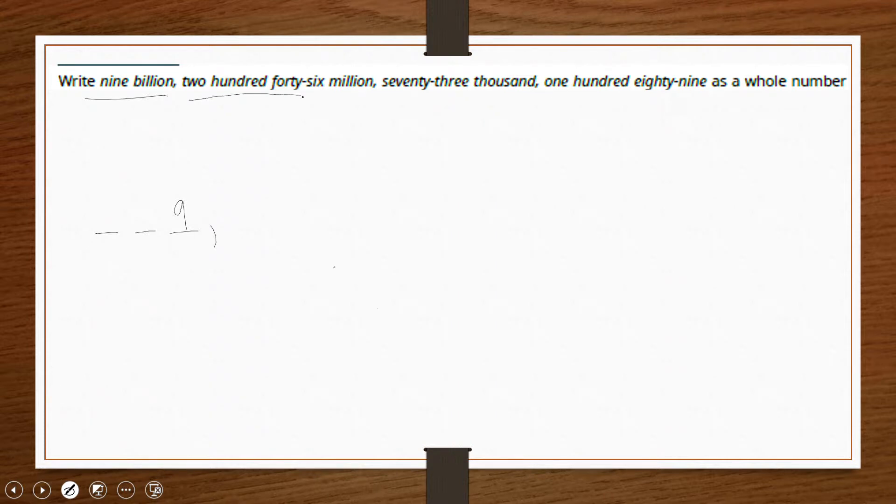Next we have 246 million. Again, three digits, therefore we should have another period followed by a comma. And reading out the digit one more time, 246 would mean that our place values are going to have 2, 4, and 6.